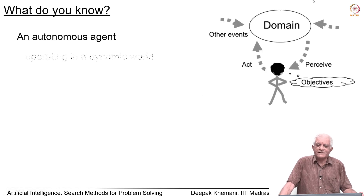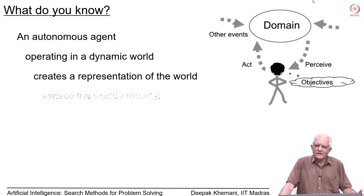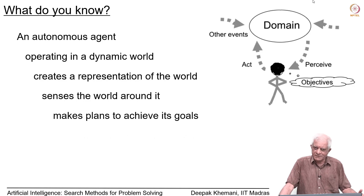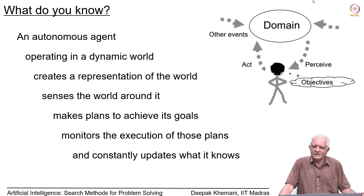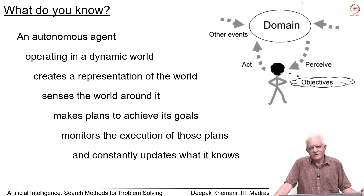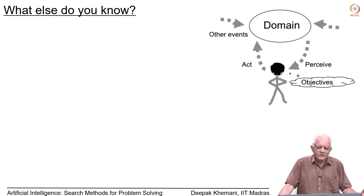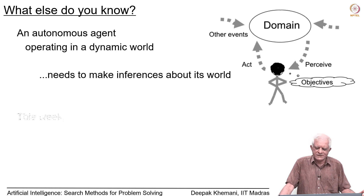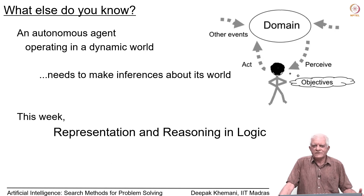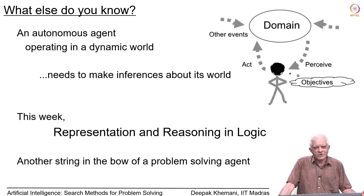As we ended last week, an autonomous agent operating in a dynamic world creates a representation of the world, senses the world around it, makes plans to achieve its goals, monitors the execution of those plans, and constantly updates what it knows. Not only does the agent monitor the world, it also needs to make inferences about its world — you see something and infer something from that, which is equally important to sensing.